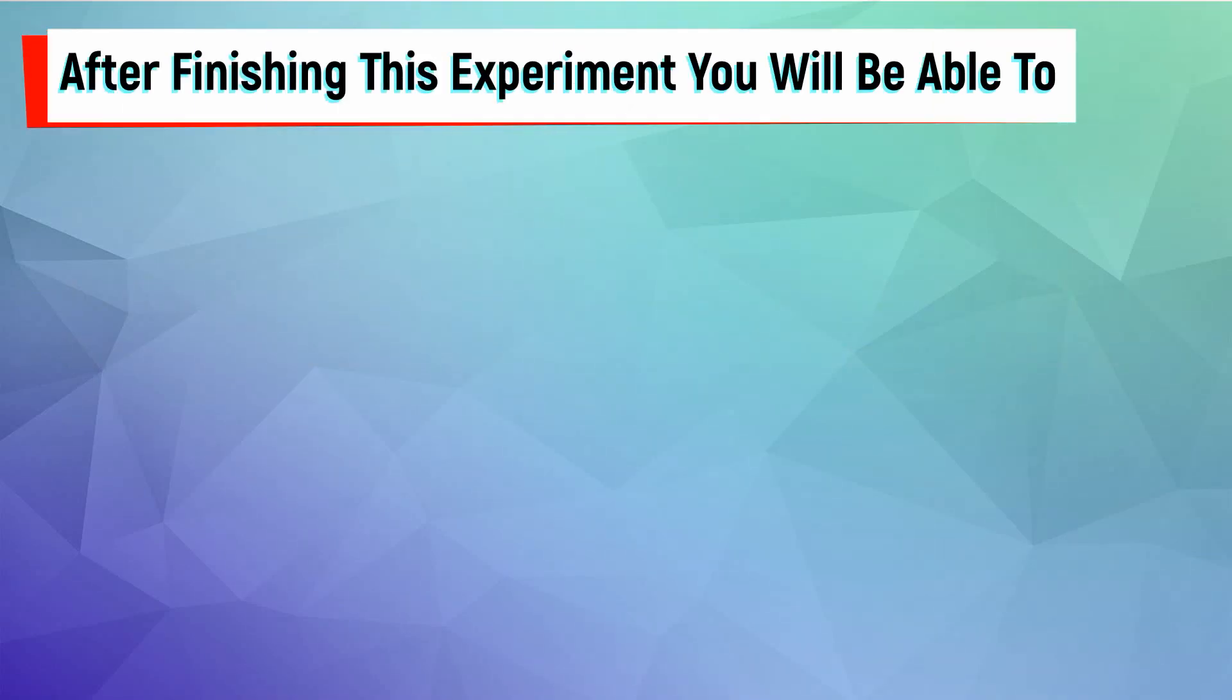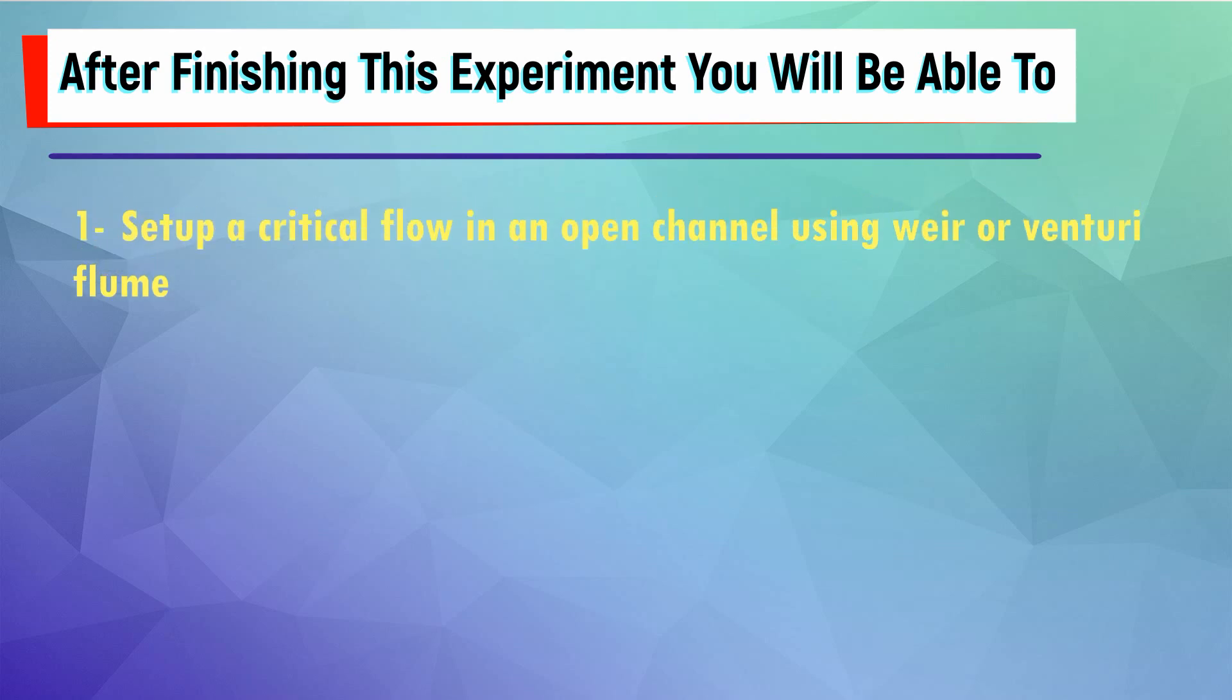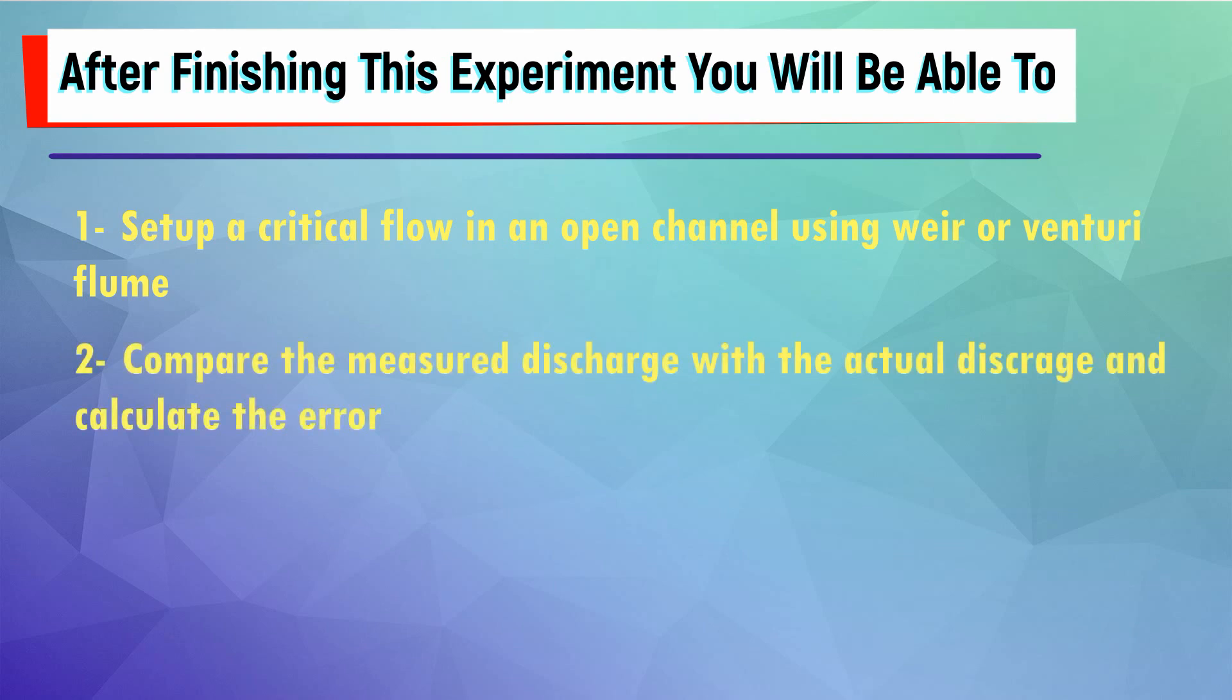After finishing this experiment you will be able to: number one, set up a critical flow in an open channel using a weir or venturi flume. Number two, compare the measured discharge with the actual discharge and calculate the error. Number three, find a better value for the equation constant to better fit the data.